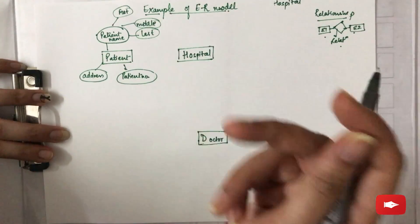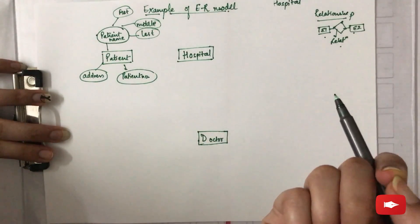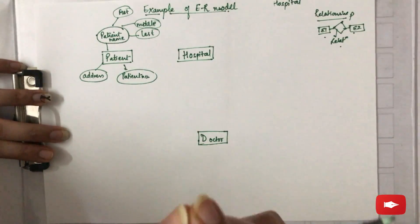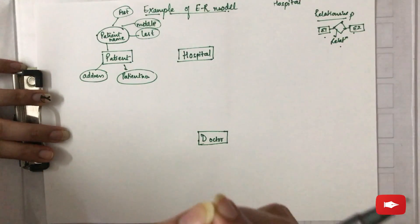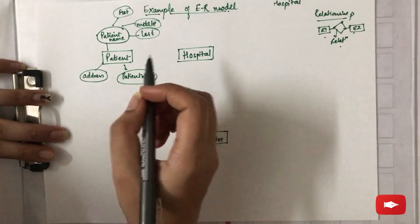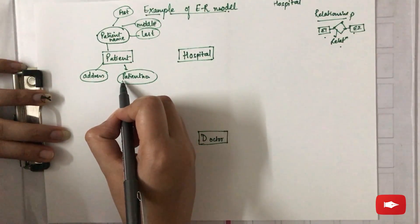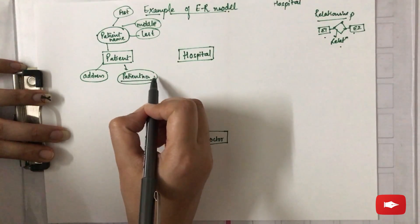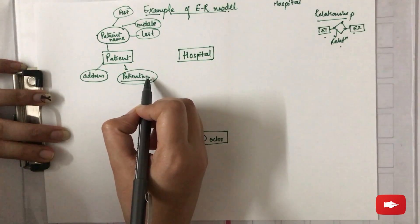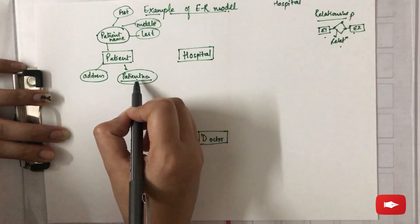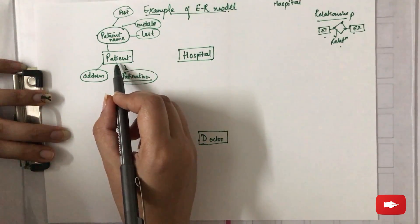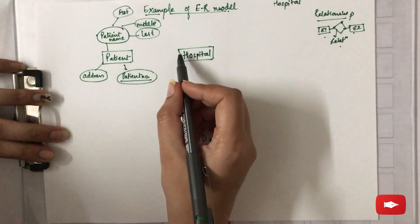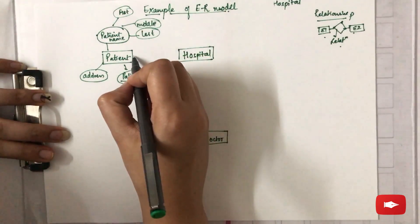Looking at all these attributes, patient number can act as the primary key. As you all know, a primary key is the key that uniquely identifies a particular entity — so every patient is going to have a unique patient number. We represent it by underlining it, so patient number is the primary key for this entity.